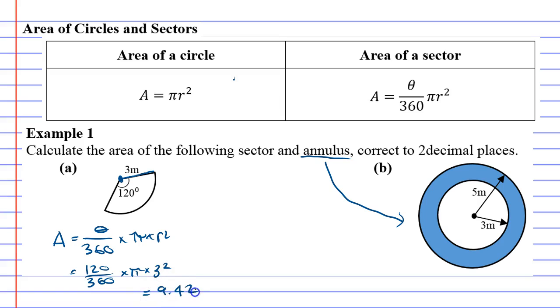We'll look at question B now, which is an annulus. Essentially, you've got to look at it as being two circles, so we're going to find the area of each circle. There's lots of ways you can do this, actually. Let's call the outer circle L for large and the inner circle S for small.